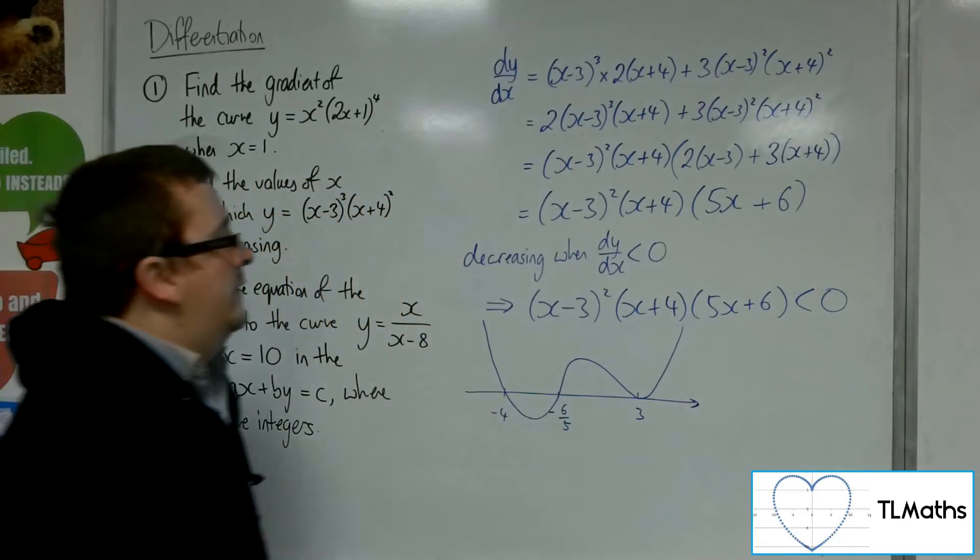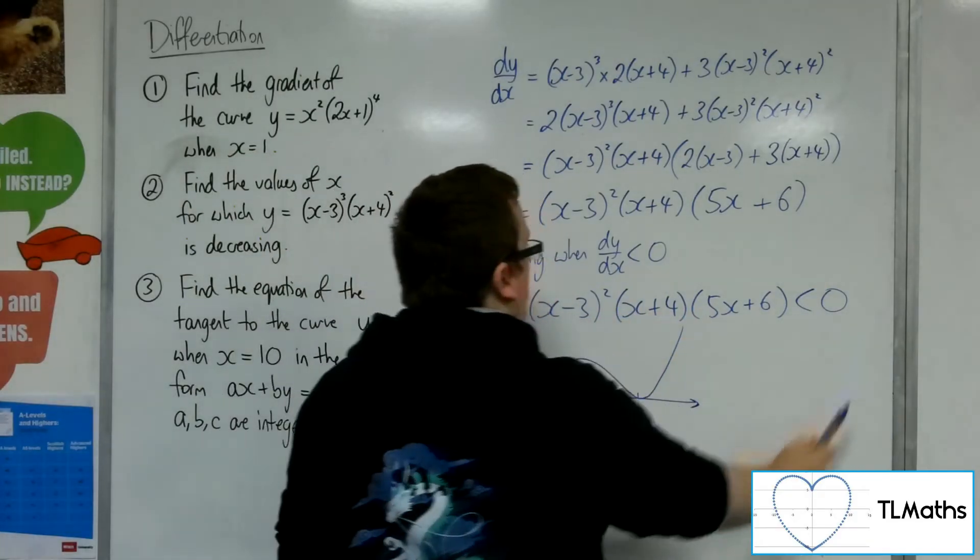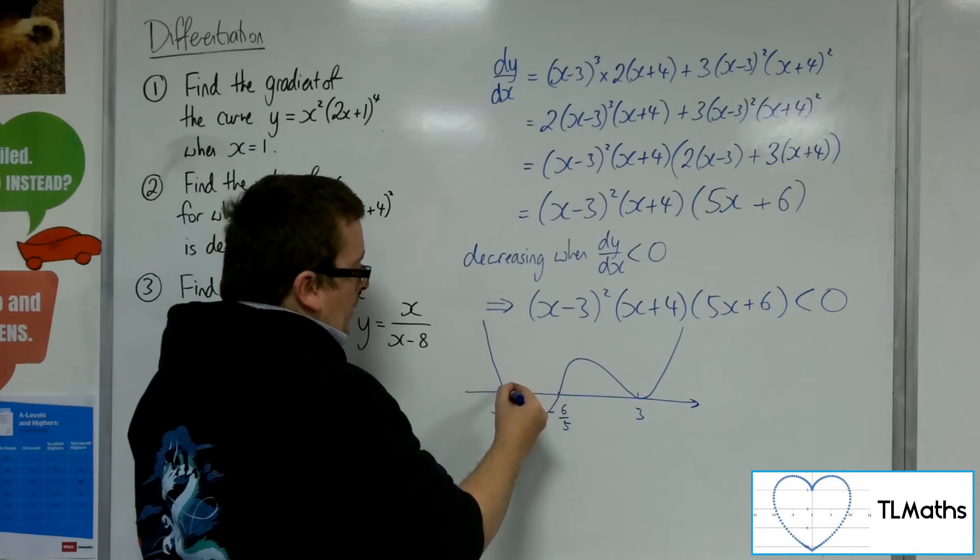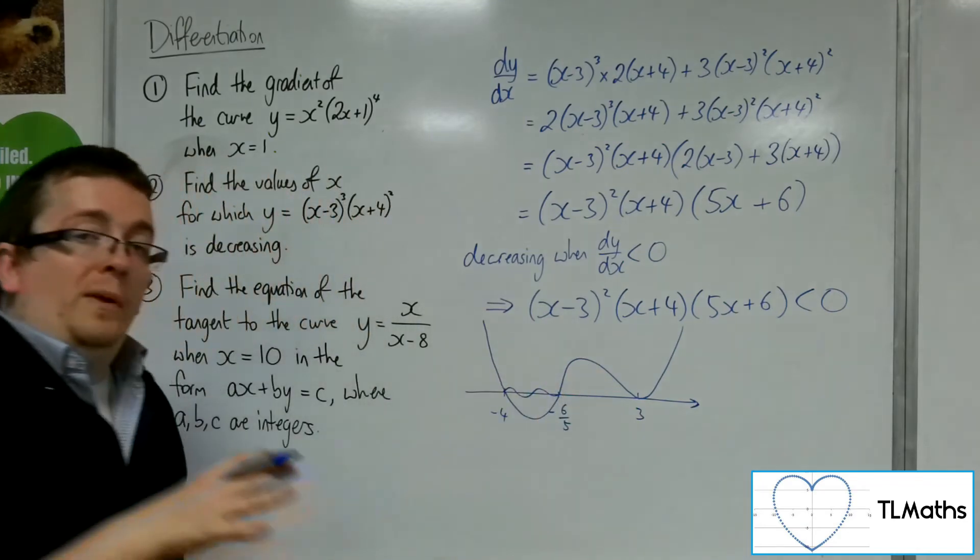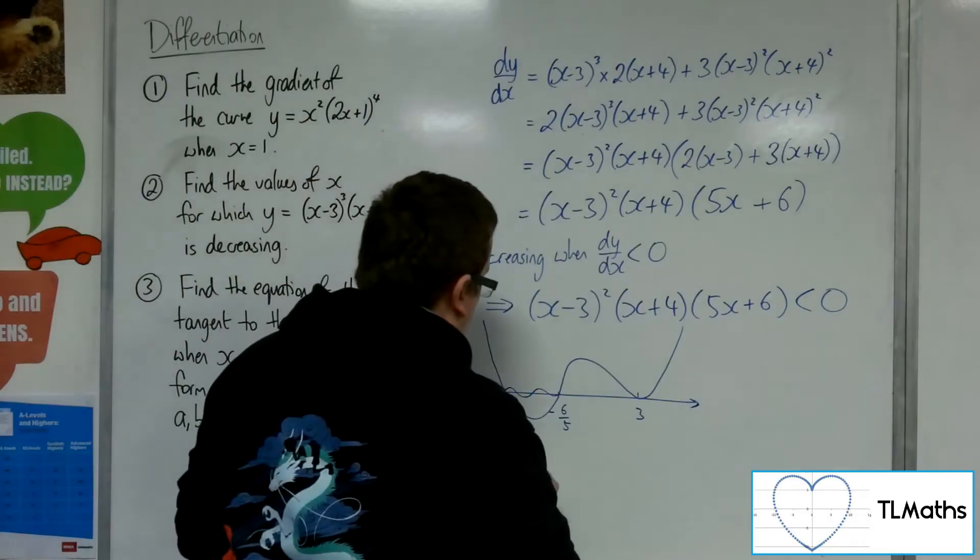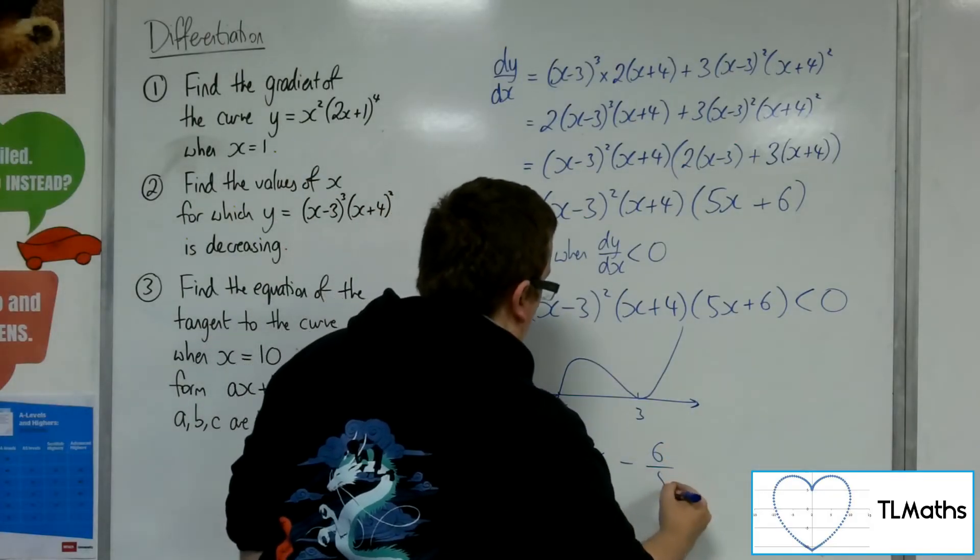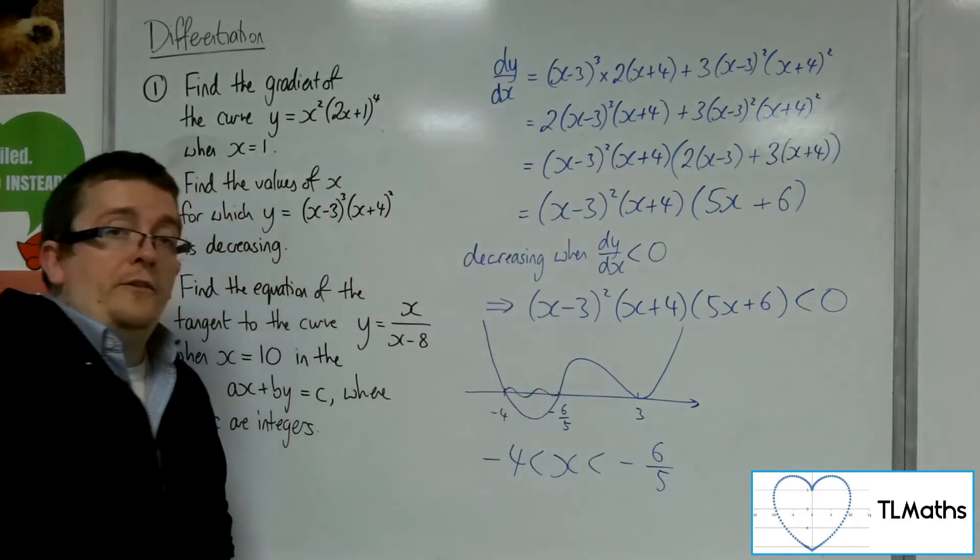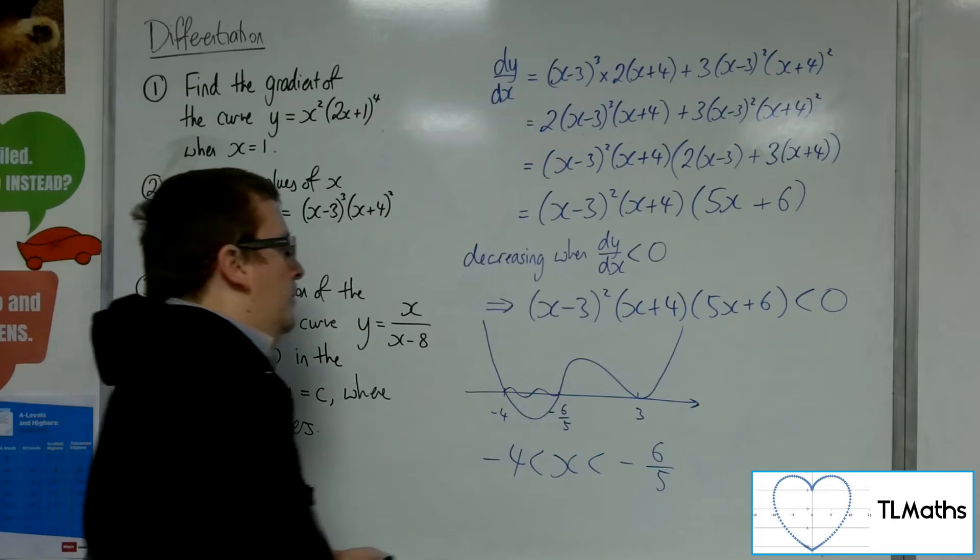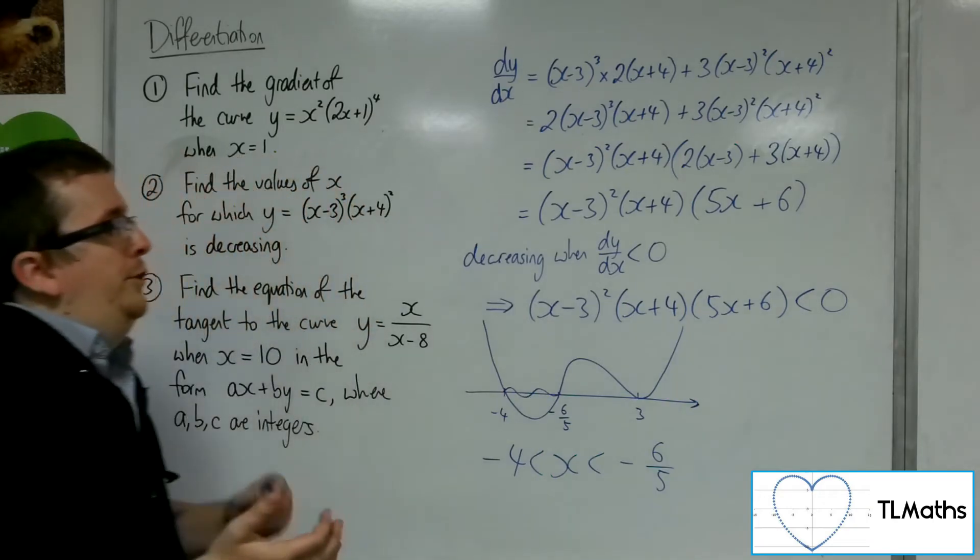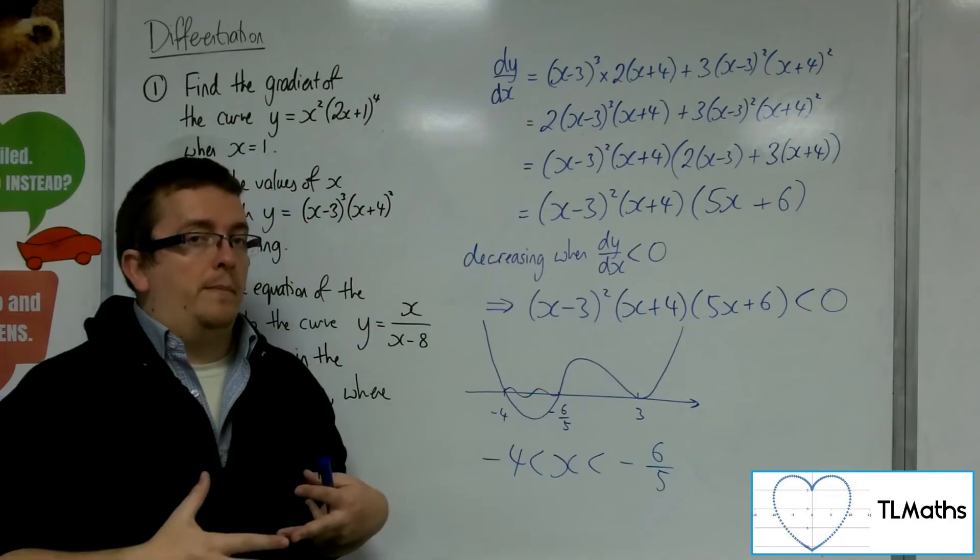And so what I'm being asked is, where is this curve below the x axis? And it's below it here. That's the only point where it's below. So the answer is that x would have to be between minus 4 and minus 6 fifths. So that's a little bit of using our graph sketching skills to solve a problem there.